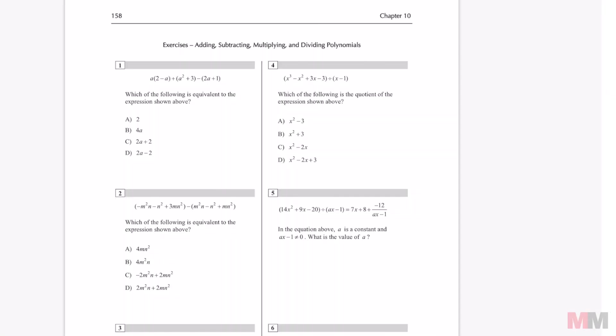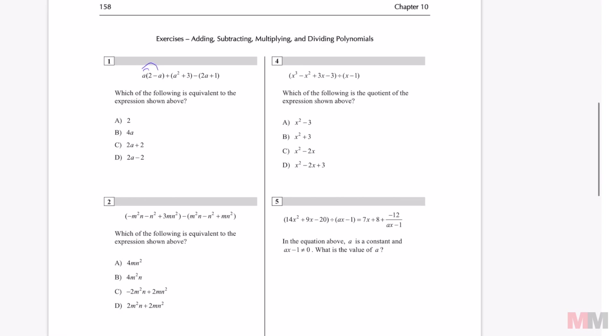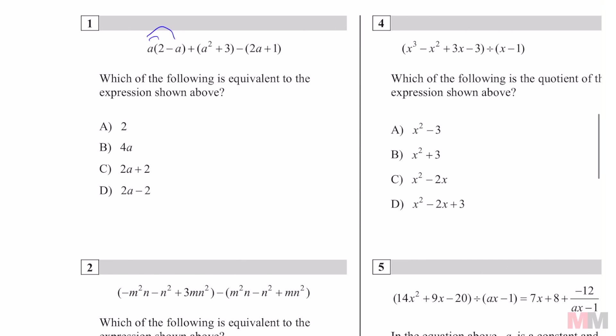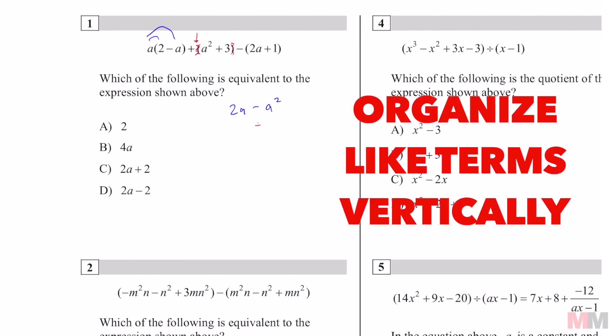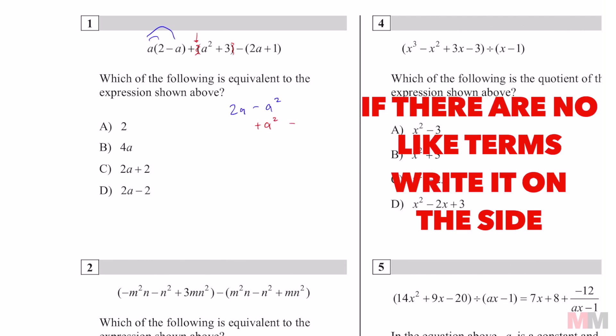For the first question it's just combine like terms but I'm going to show you a strategy on how to organize the terms better. So a times 2 is 2a. A times negative a is negative a squared. Here's how I combine like terms. If this number does not have any number in front of the parentheses then it's kind of like the parentheses aren't there. So it's just a squared plus 3. We can write plus a squared right under this one because they're like terms and plus 3 we're just going to put it aside because there's nothing like terms with it.